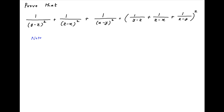We start by noting that the square of the sum of three numbers a, b, and c — which is (a + b + c)² — is equal to a² + b² + c² plus two times, in brackets, ab + ac + bc.